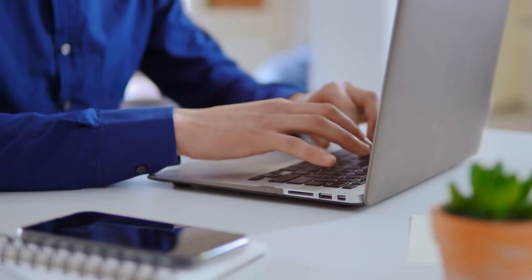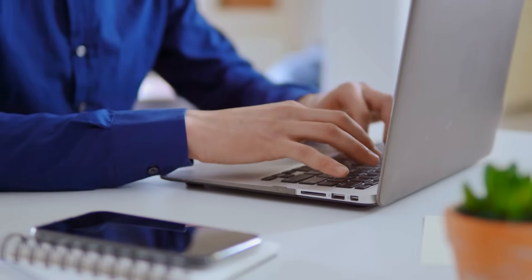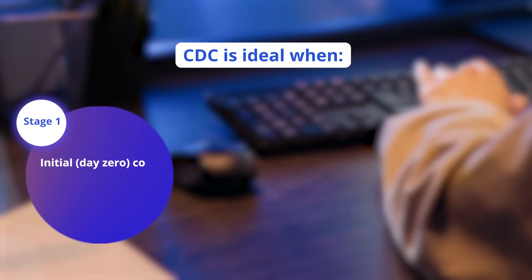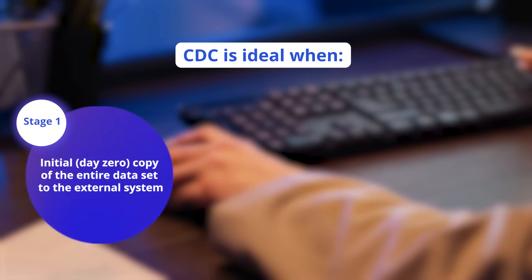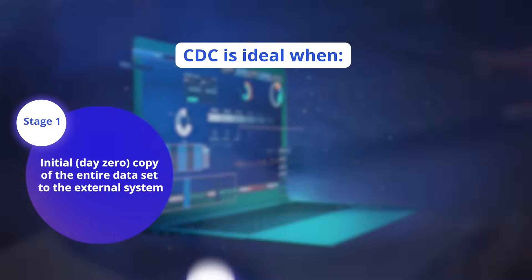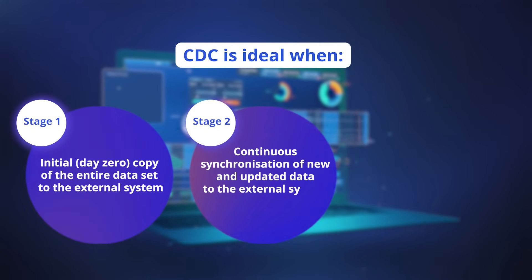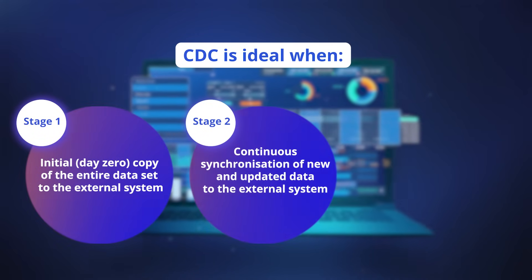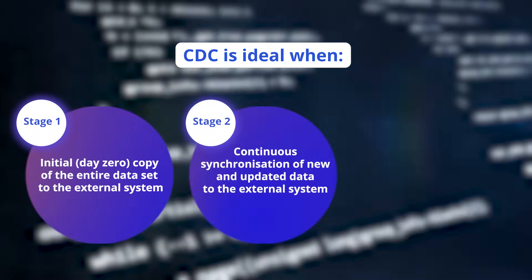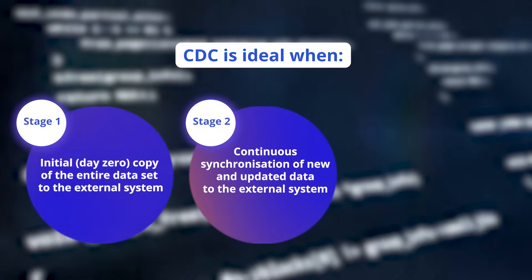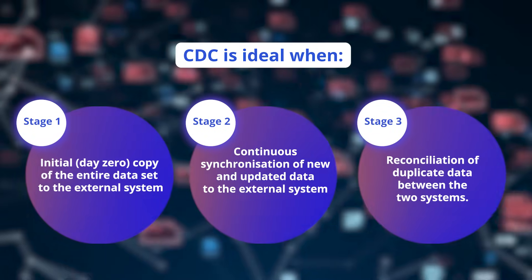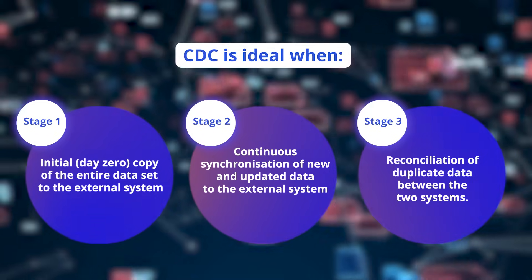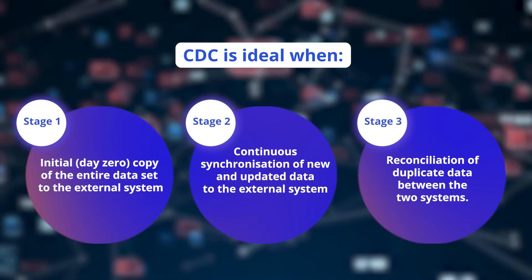You can consider CDC as a real-time data replication process including the following stages. Stage 1 is the initial stage when you are enabling it. On Day 0, you need to copy all the data from a Salesforce org to your external system. Stage 2 is the continuous synchronization of new and updated data to the external system — you just need to enable it and CDC will automatically take care of the processes. The third stage is the reconciliation of duplicate data between the two systems, making sure that both systems are in sync and have similar data.